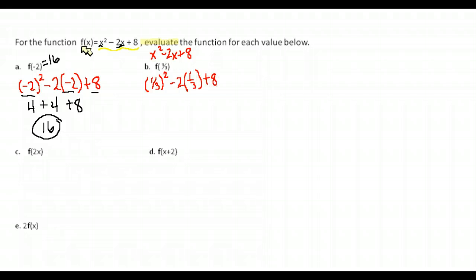If we evaluate that, when you square a fraction, you just square the top and square the bottom. So one squared on the top is 1, and three squared on the bottom is 9. So I have one ninth minus 2 times one third is two thirds plus 8. Now if you had a calculator, those fractions, you could easily add those up. If you want to do it by hand, we need to get a common denominator there.